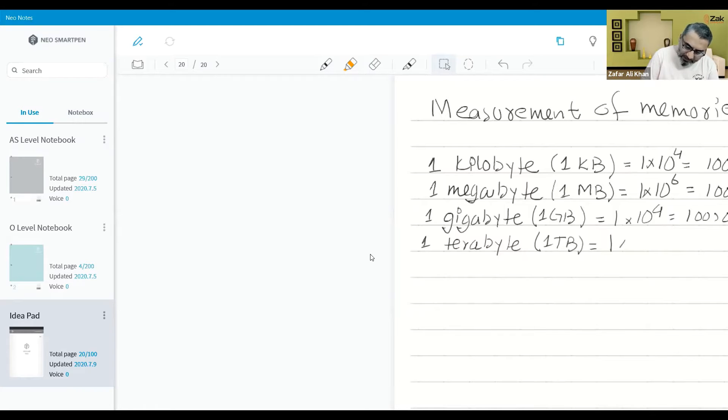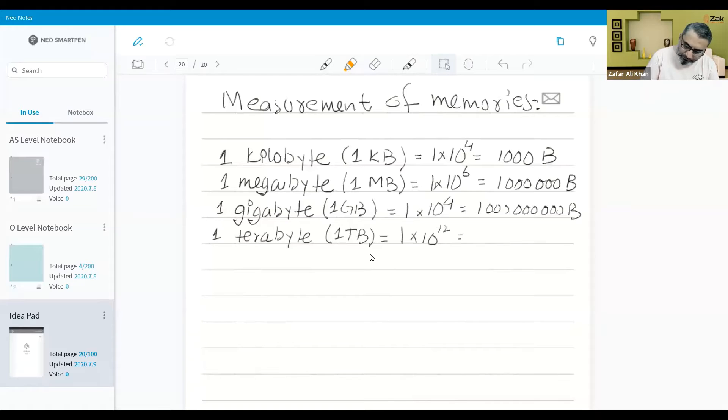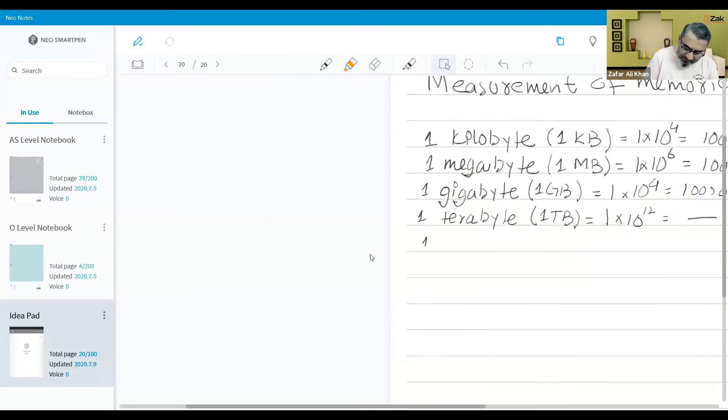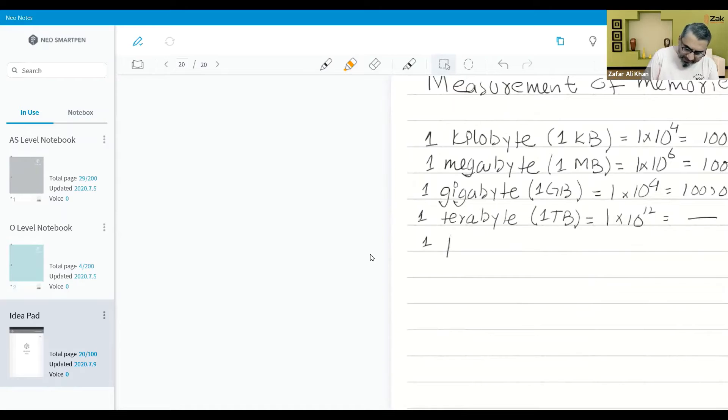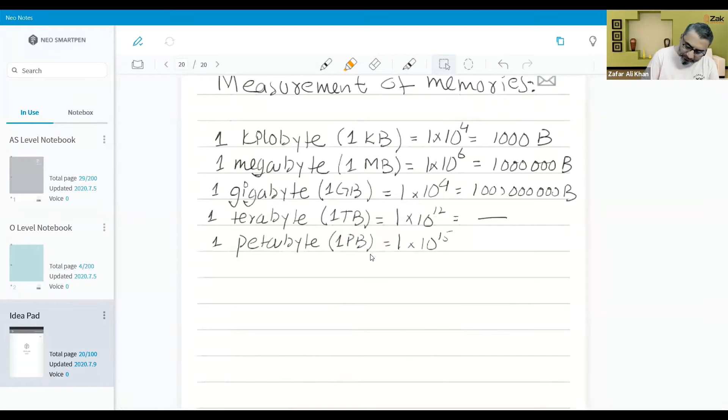1 TB, that is 1 × 10¹². Then we have 1 petabyte, 1 PB, that is 1 × 10¹⁵. So I hope you got the idea. This system that you have just observed is what is actually enforced in current standards of International System of Units, SI base 10 system.